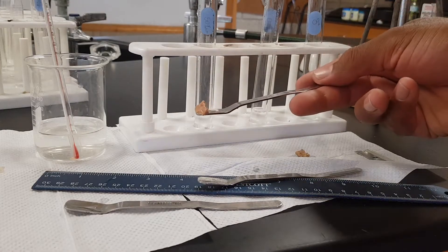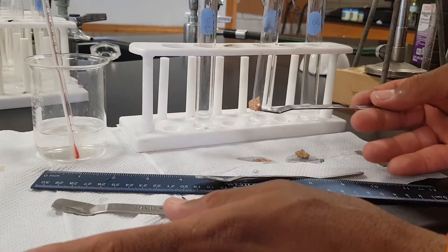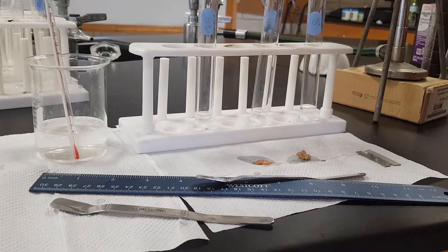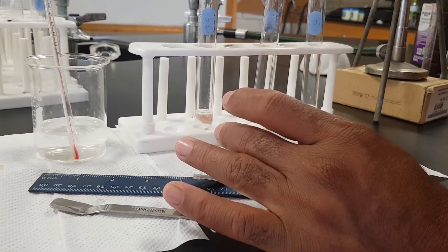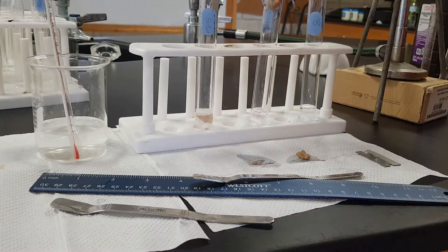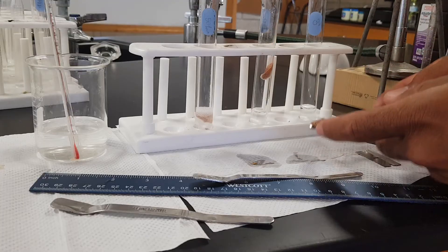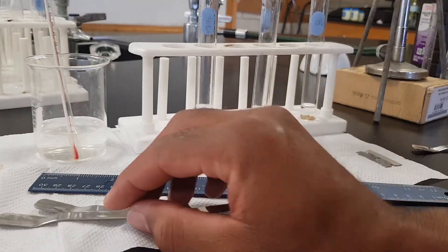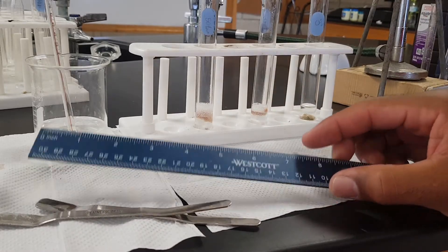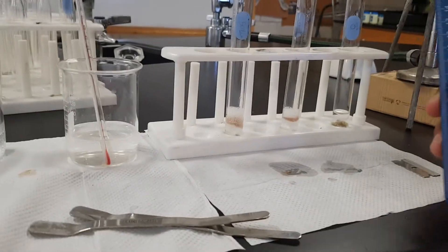Once you have all the liver ready, what you can do next is to put them into each of the test tubes with the hydrogen peroxide. Then you're going to wait for about 30 seconds and measure the height of foam for each.